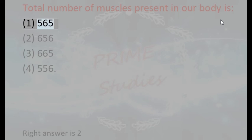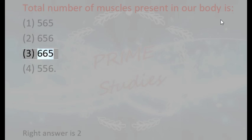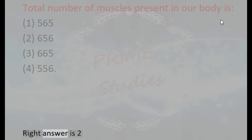Total number of muscles present in our body is: 1. 565, 2. 656, 3. 665, 4. 556. Right answer is 2.